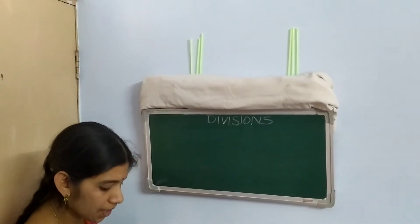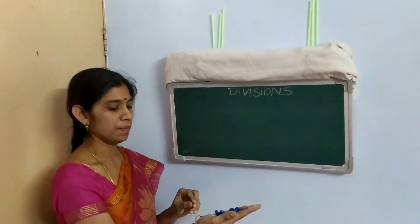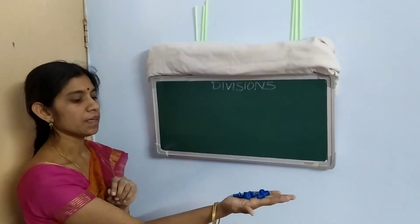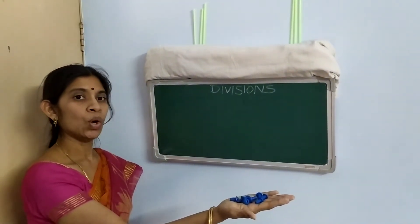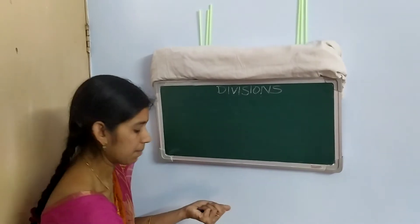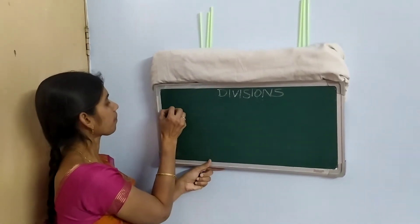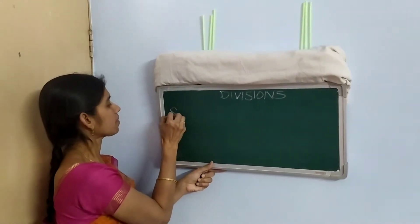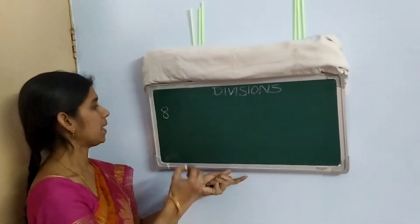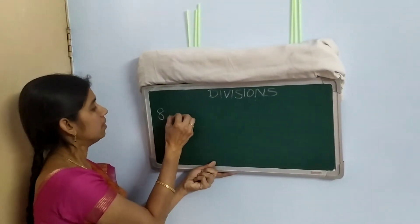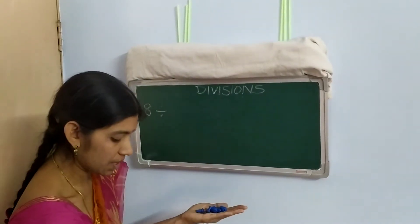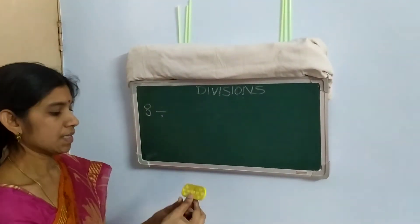See, here I am having some bowls with me — there are nearly eight bowls with me. I want to share them into two groups now. How many bowls? Eight bowls I am having here. I want to divide them into two groups. This is a division symbol — see here.